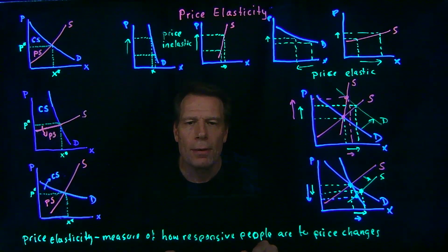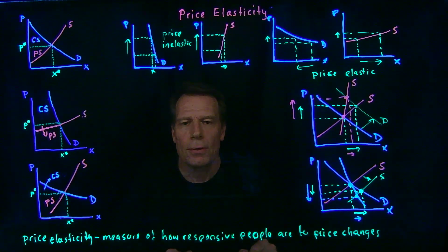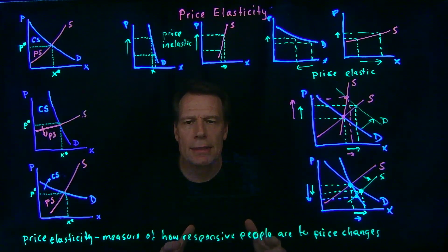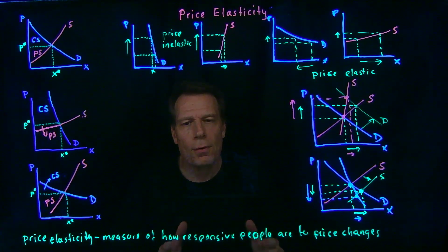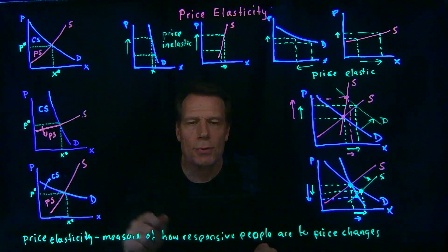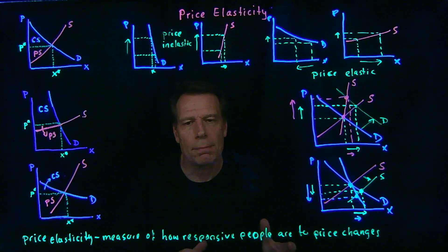Or I might ask what would have to be the case for the price change to be bigger, or the quantity change to be bigger — and that has to do with the price elasticities of one of the two curves. And of course, you can think about the relative size of consumer and producer surplus as price elasticities of demand and supply change.